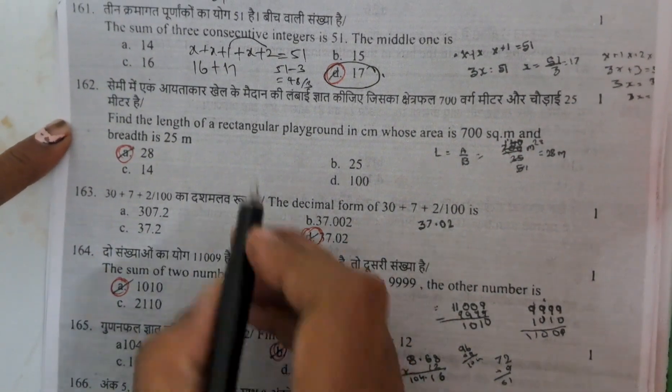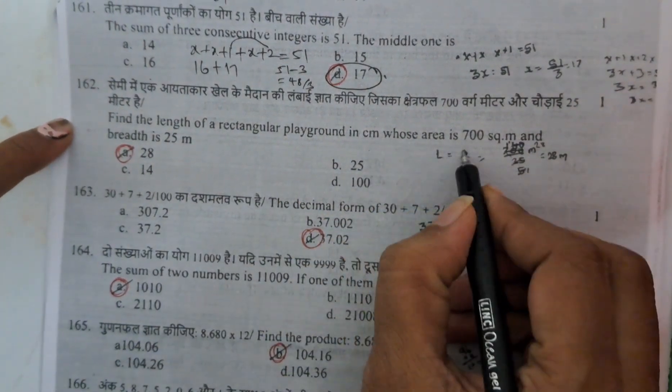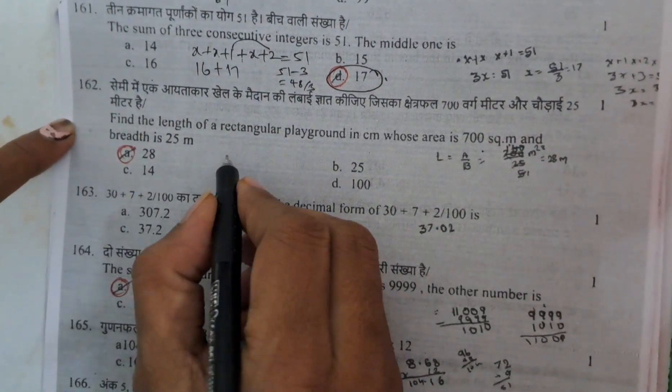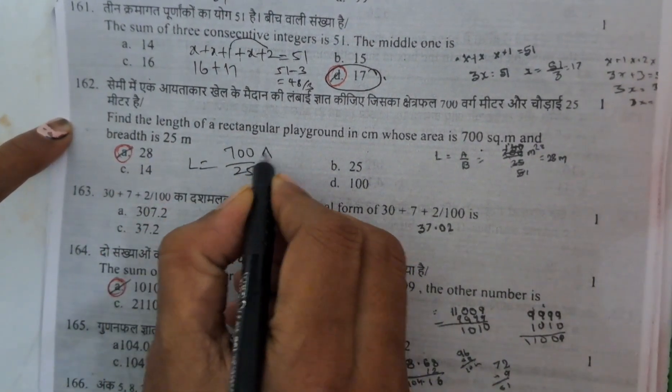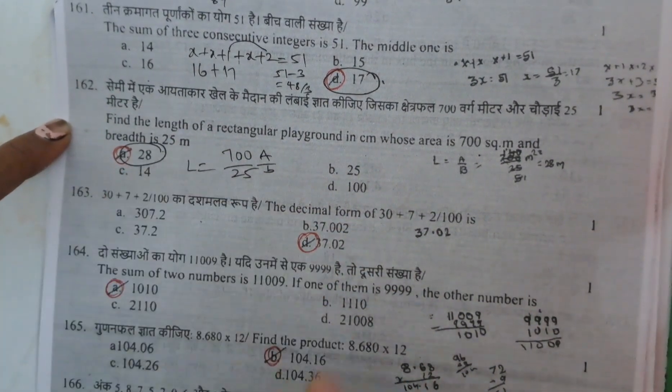And next 162. The length of the rectangular playground whose area is 700, breadth 25. 700 by 25 is the answer. If you do the division, length formula is area by breadth. You will get the answer 28.